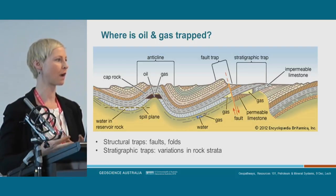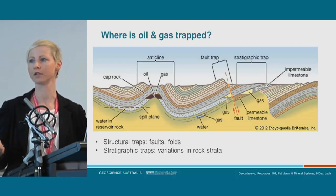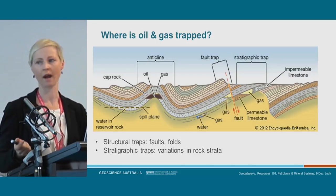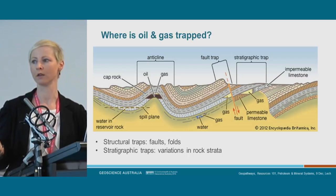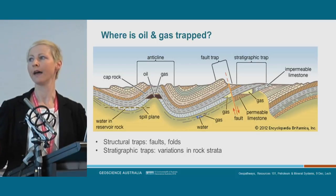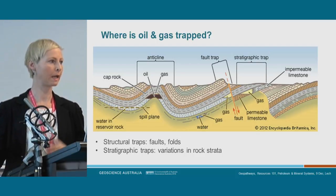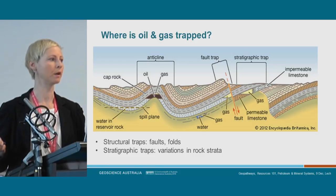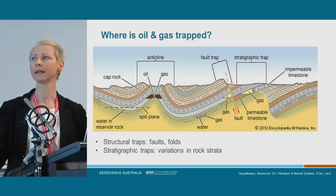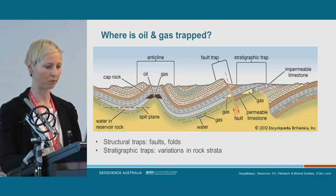Structural traps are the most common in oil and gas exploration, but we also have stratigraphic traps, which relate to variations in the rock strata. Here is an example where we have some limestone — this part is permeable, so oil and gas can migrate through. As it migrates, it may reach an impermeable limestone with poor porosity and permeability, and it can get trapped there underneath the sealing mudrock.